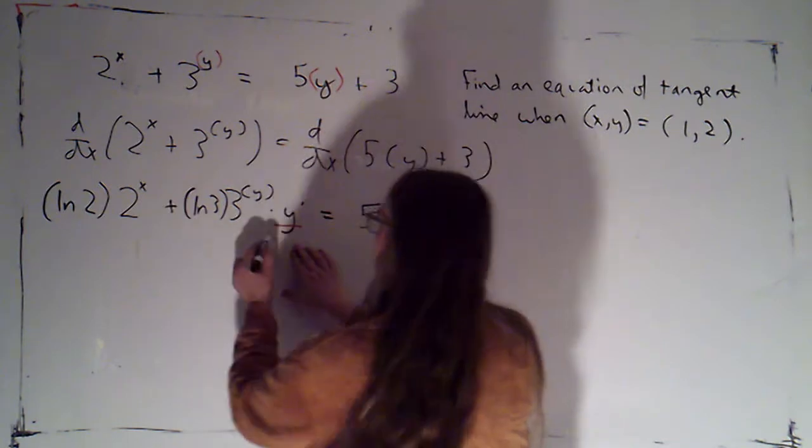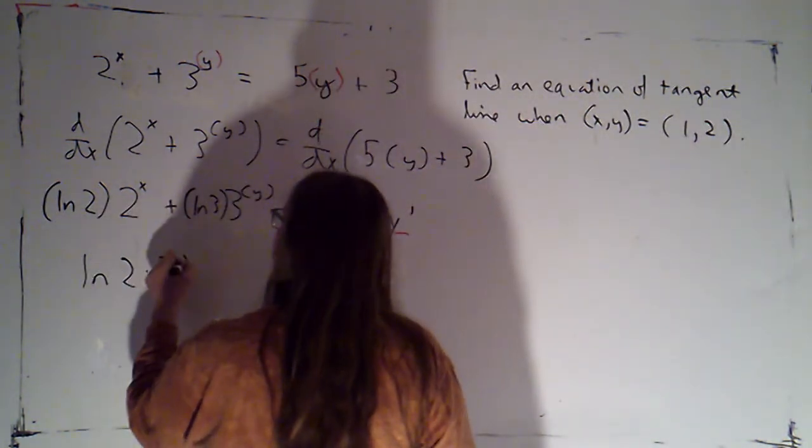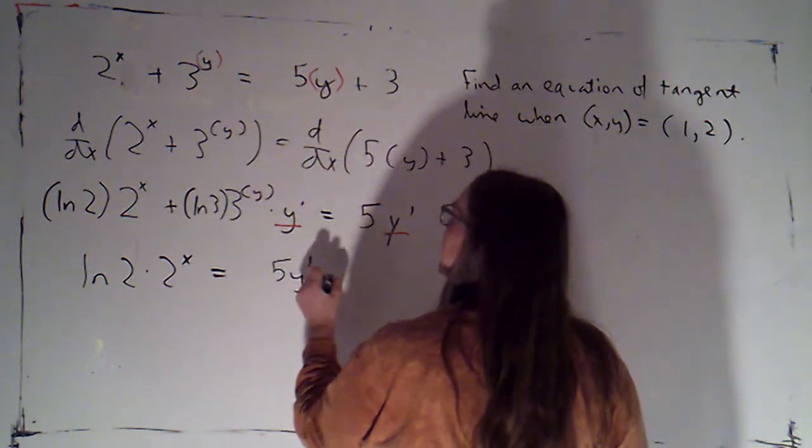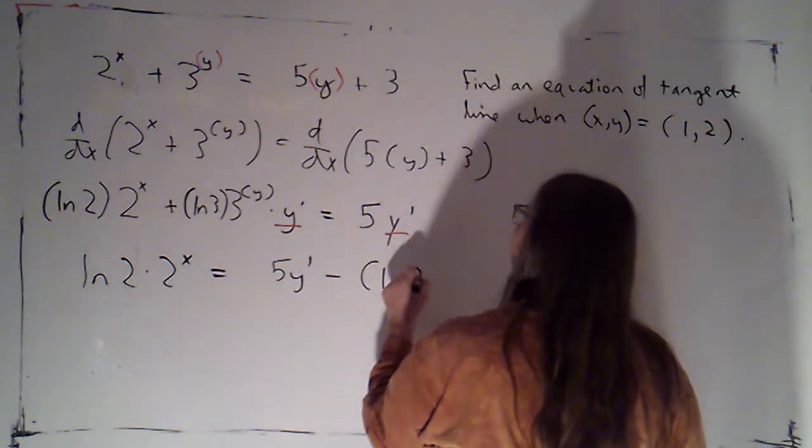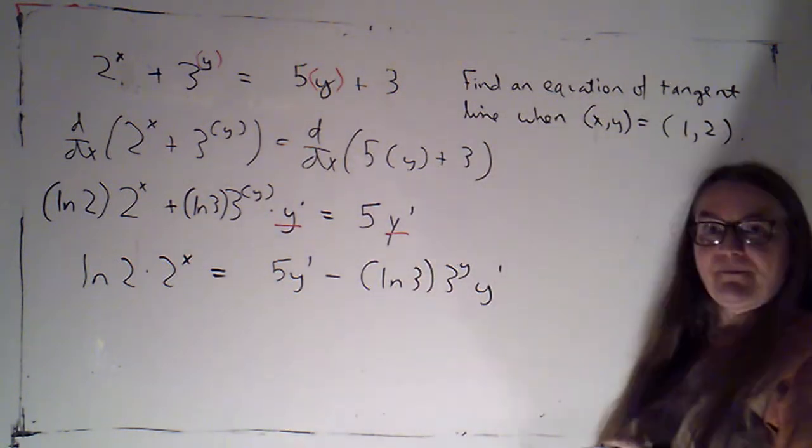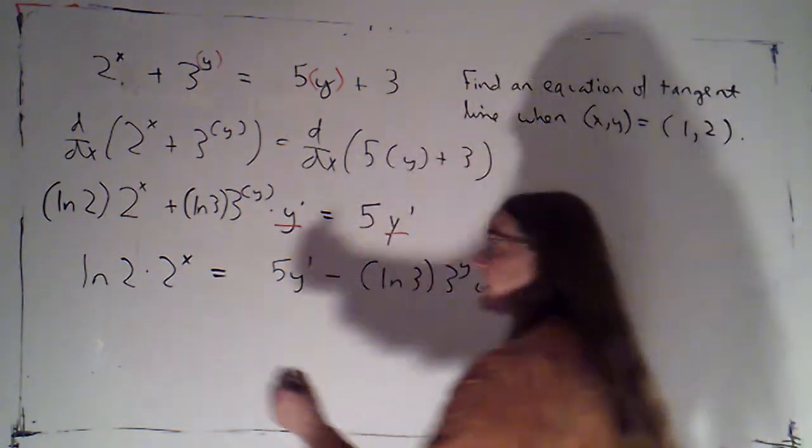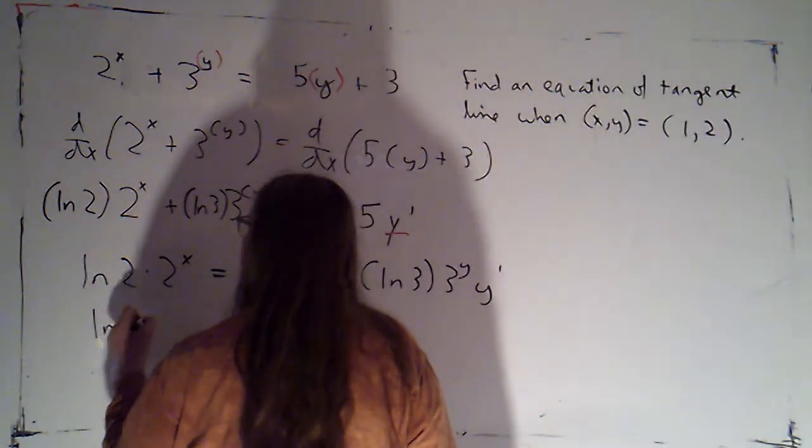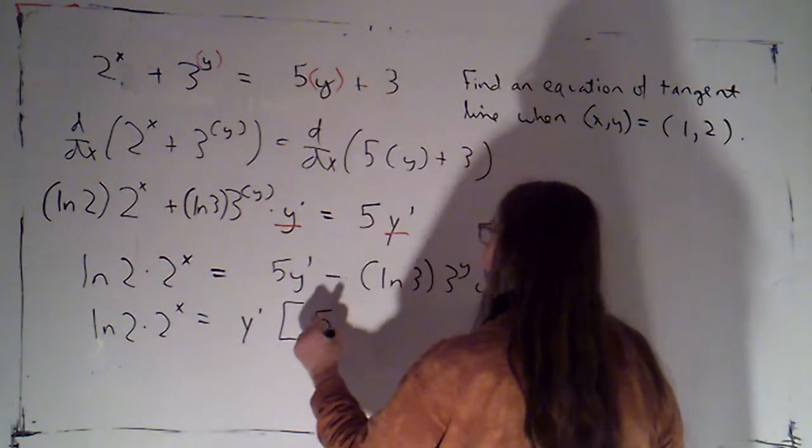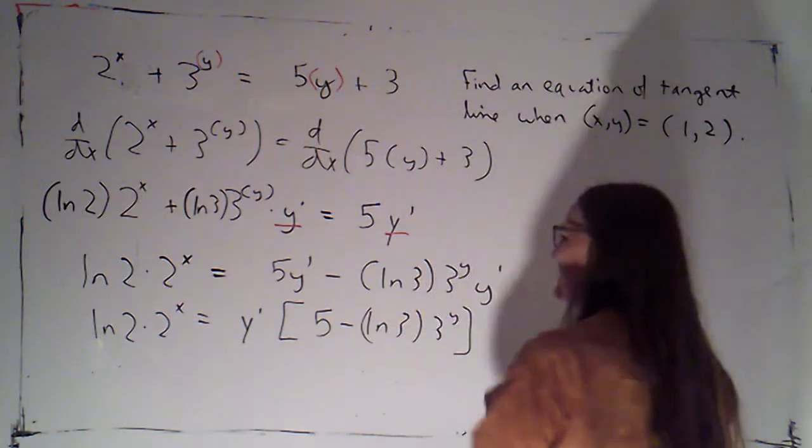I'm going to move this term, which has a y prime in it, over to this side. So natural log of 2 times 2 to the x will equal 5y prime minus the natural log of 3 times 3 to the y times y prime. And since now there's a y prime in both terms, I can factor that out. So natural log of 2 times 2 to the x equals y prime times 5 minus the natural log of 3 times 3 to the y.